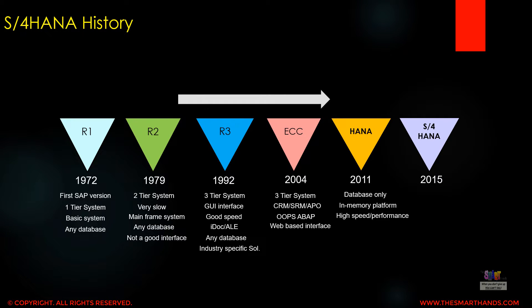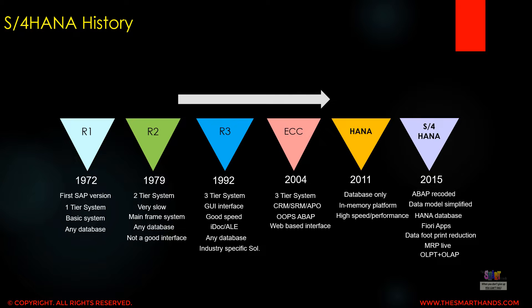In 2015 SAP finally launched their latest product, S4 HANA. With this system everything was rewritten — all the ABAP coding was rewritten, data models were simplified, and only the HANA database can be used. Fiori apps were launched, along with data footprint reduction, MRP Live, and the combined OLTP plus OLAP system in one. On-the-fly calculations are possible because of fast in-memory database access.